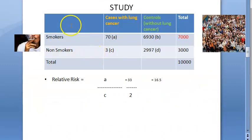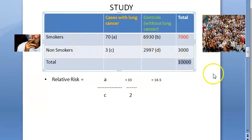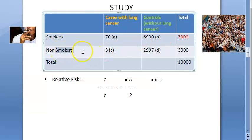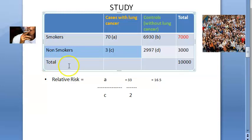Here they have shown a study with around 10,000 people. Of those, 7,000 are smokers and 3,000 are non-smokers. Among the 7,000 smokers, 70 people have lung cancer and the remaining do not. Among the 3,000 non-smokers, only 3 people have lung cancer, even though they were not smoking.